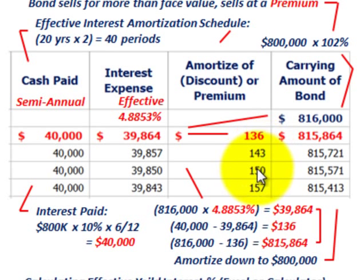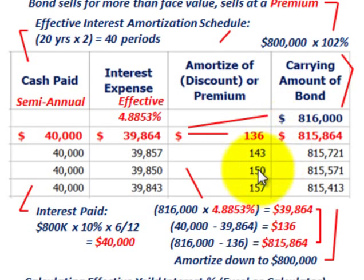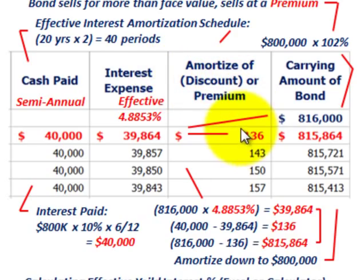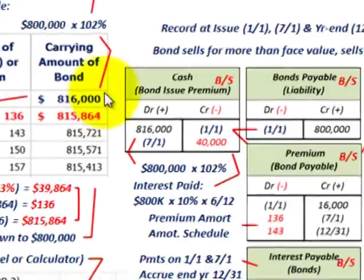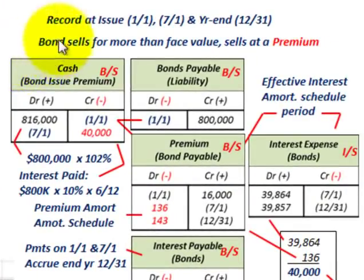Now if it was a discount, the bond would have sold for less than the face value, and we'd go through the same arithmetic. That takes care of setting up our amortization schedule. Now let's look at how we record this on our balance sheet.